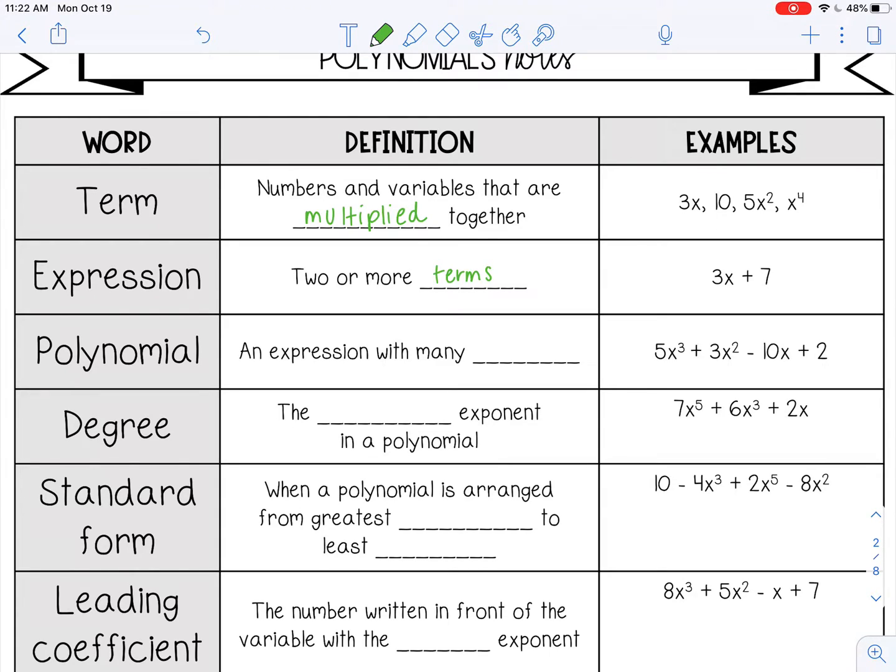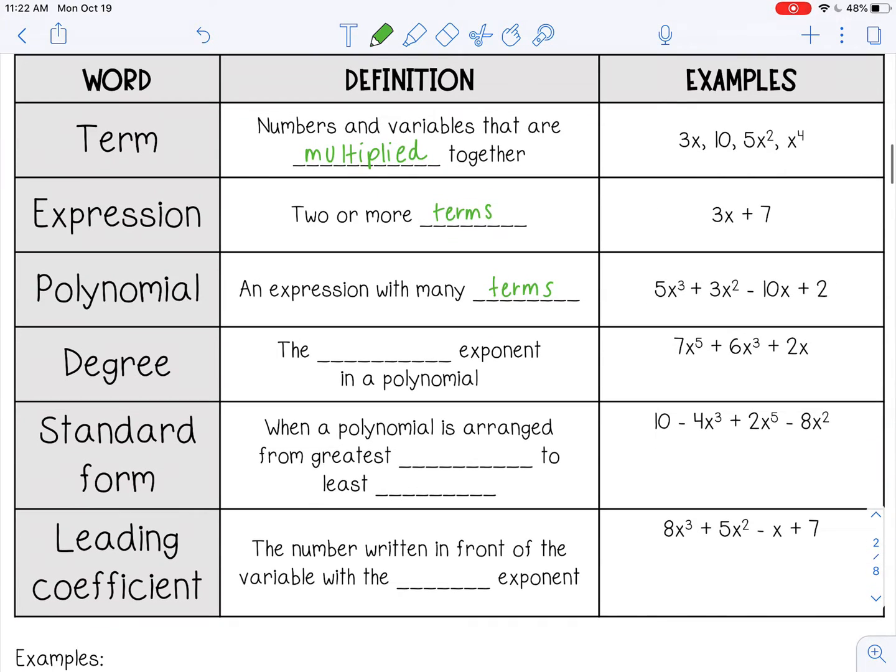A polynomial is an expression with many terms. So 5x cubed plus 3x squared minus 10x plus 2, that's a polynomial.